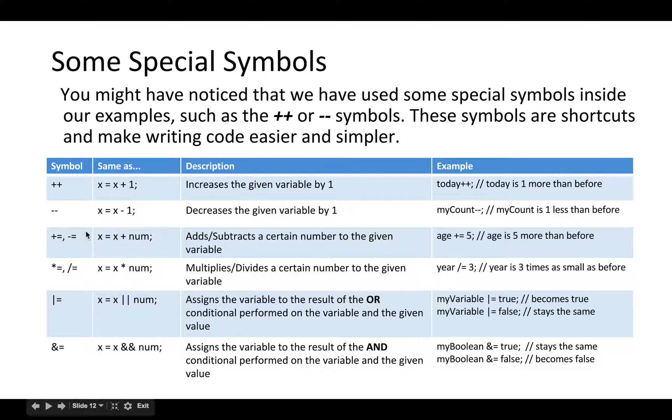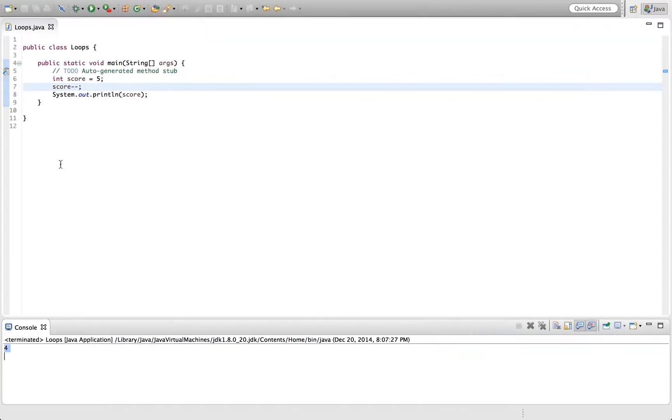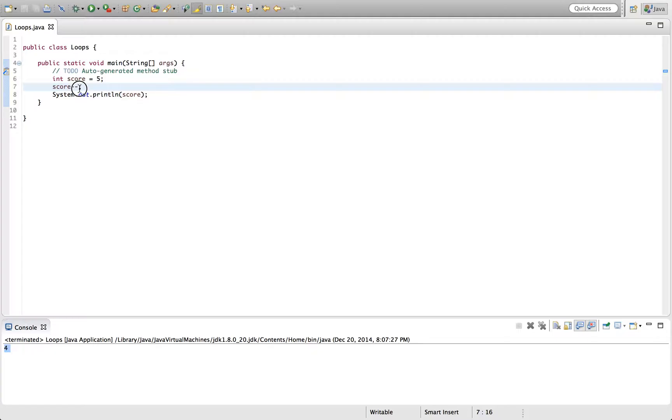There's also other operators that let you increase or change the value stored in variable by a given amount. For example, if you want to increase your score by five, like if you were playing a video game and you killed a five point enemy or something like that. To increase the score by five, you could say score equals score plus five. But that takes a while. So a faster way to do it is to say score plus equals five. It's just shorthand for the same thing. And now, score equals ten.